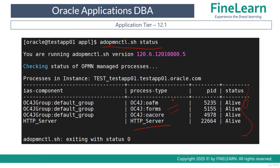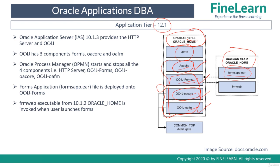The main difference between release 12.2 and 12.1 is that in 12.2 we have Fusion Middleware 11g, but in 12.1 we have Oracle Application Server 10.1.3. In release 12.1 there are actually two versions of IAS: 10.1.2 for Forms and Reports, and 10.1.3 for the application server, mainly for serving web page requests.